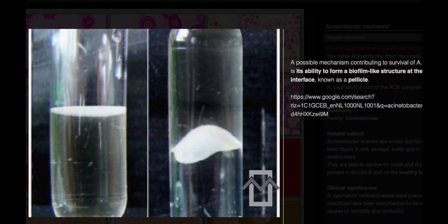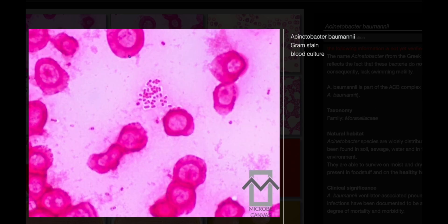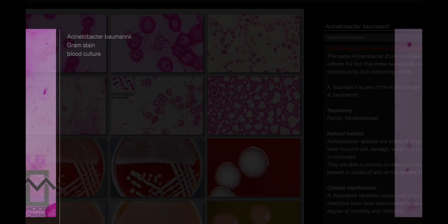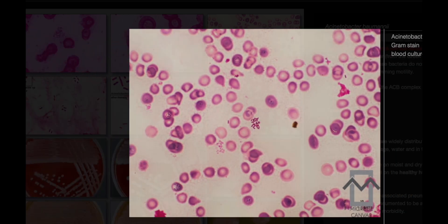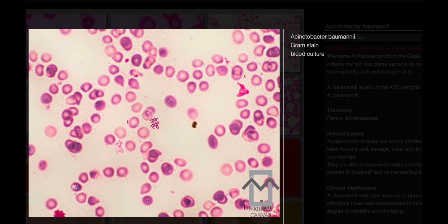Many strains are encapsulated, which can be observed in India ink wet mounts. Additionally, they can form a biofilm-like structure known as a pellicle at the air-liquid interface. In terms of antibiotic resistance, Acinetobacter baumannii is typically vancomycin resistant but colistin susceptible. They are also citrate positive.